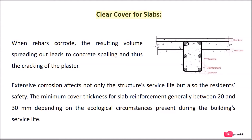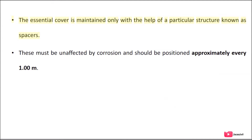Clear cover for slabs: When rebars corrode, the resulting volume expansion leads to concrete spalling and cracking of the plaster. Extensive corrosion affects not only the structure's service life but also the safety. The minimum cover thickness for slab reinforcement is generally between 20 and 30 mm depending on the ecological circumstances present during the building's service life. The essential cover is maintained only with the help of spacers, which must be unaffected by corrosion and should be positioned approximately every 1.00 m.